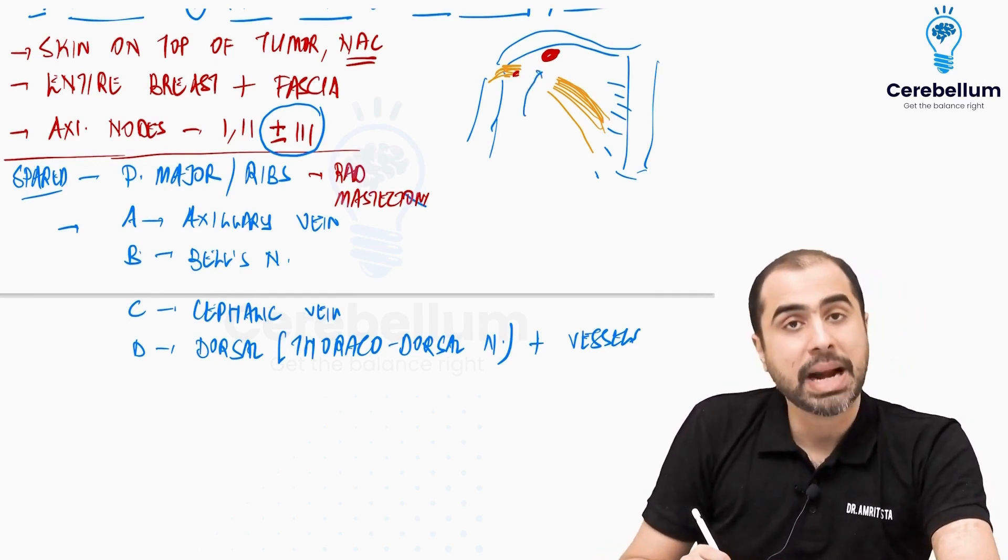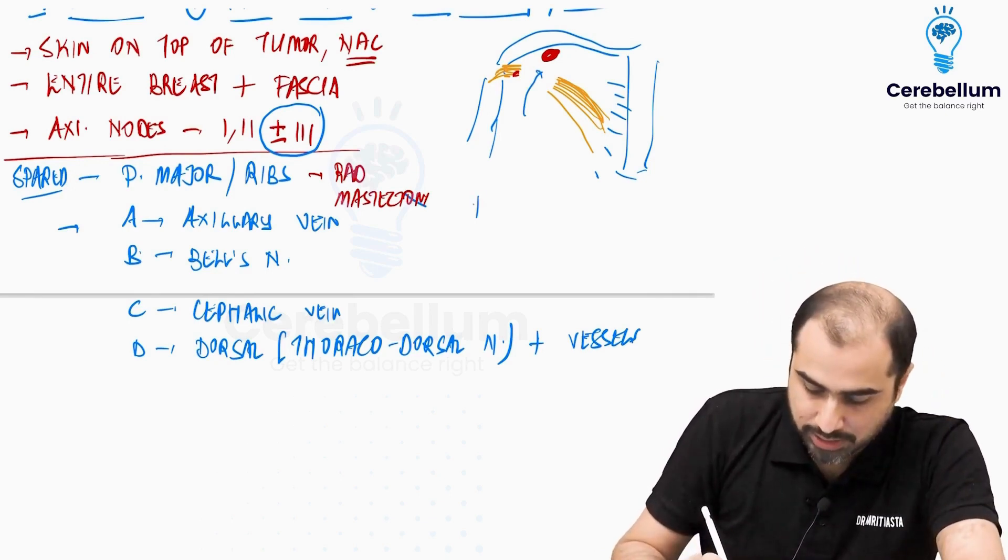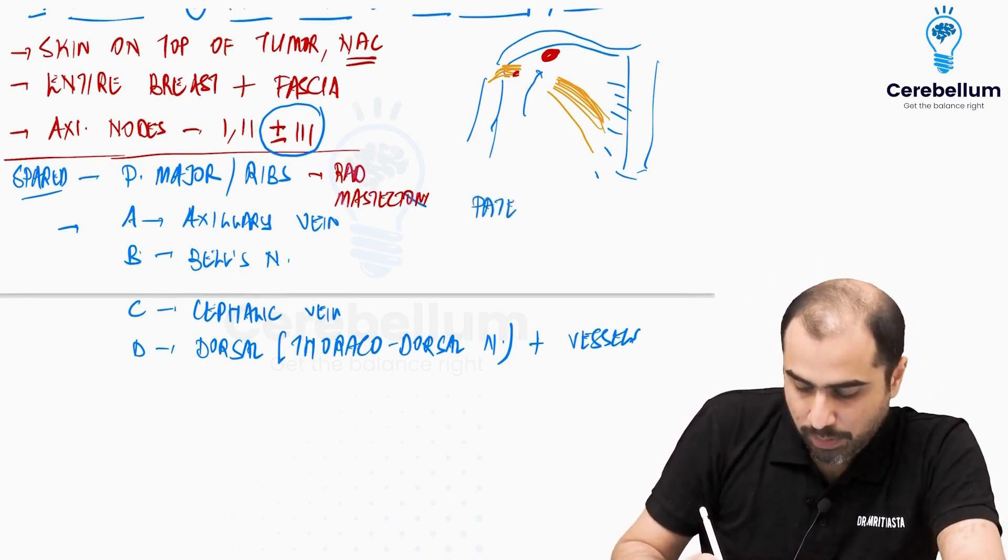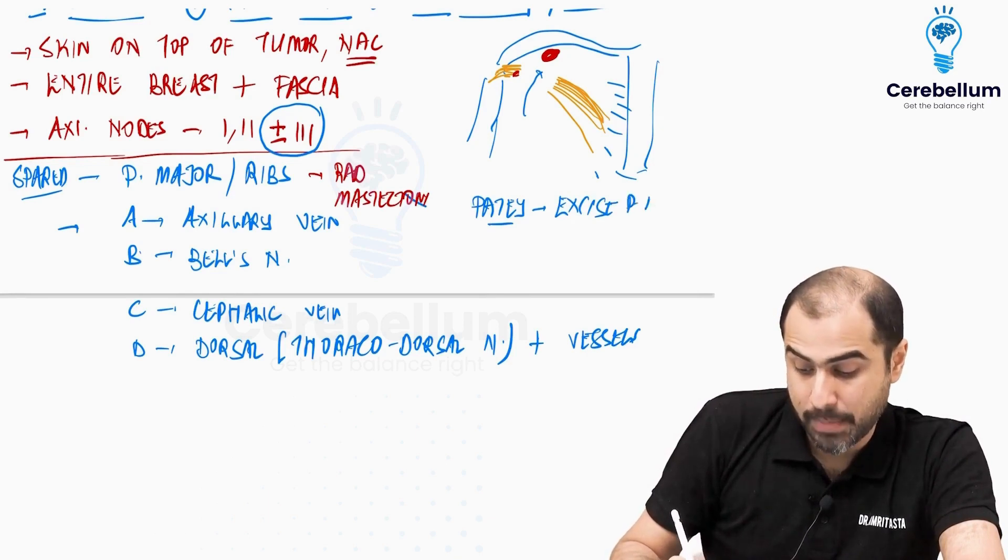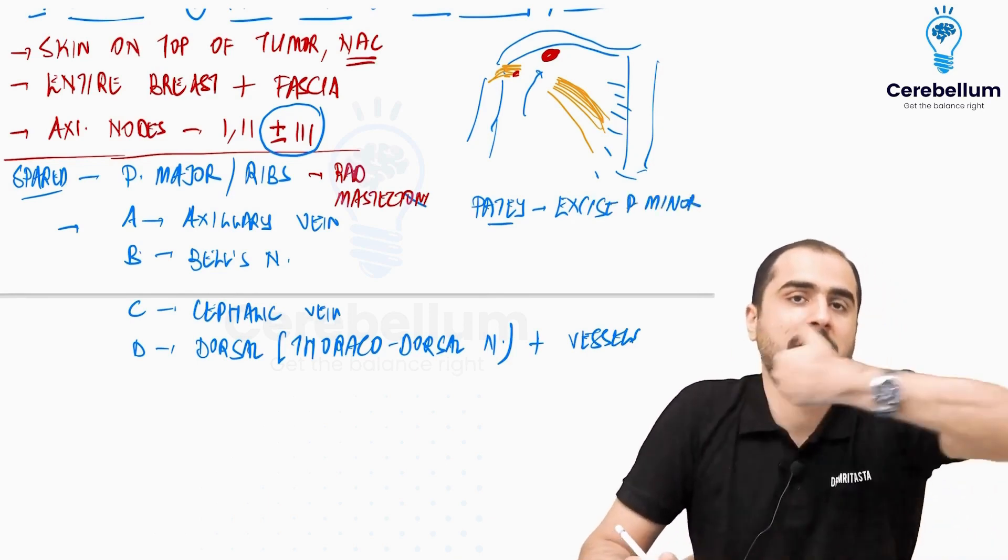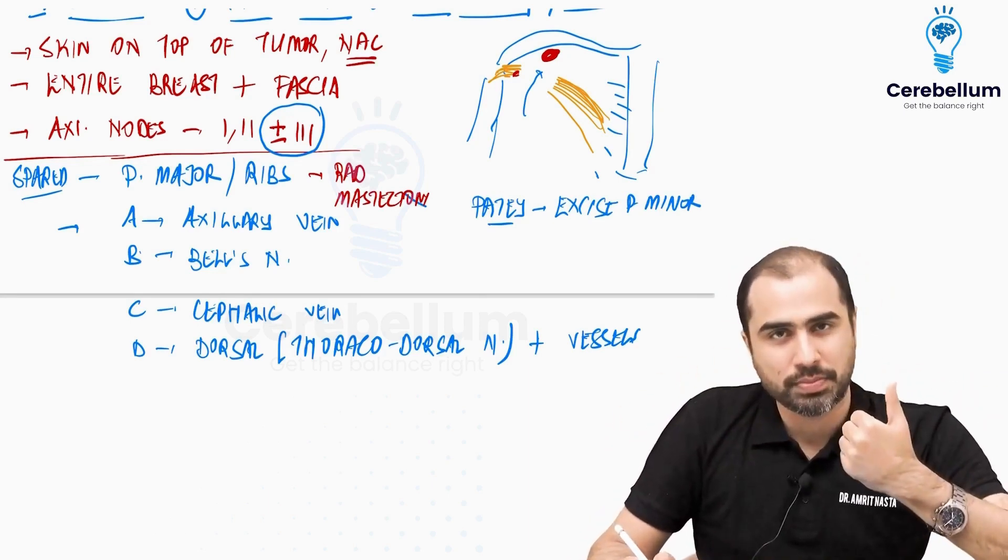This is called Patey's modification. The original MRM was this, that was Patey's. So what Patey said was, to remove the apical node, remove or excise a part of pec minor, because pec minor is what is coming in vain, not pec major. Pec major, I lift and bring it in front, remove a part of pec minor, remove the apical node. Job is done.